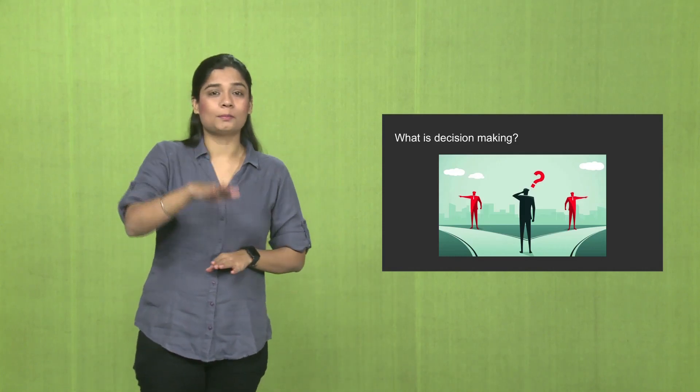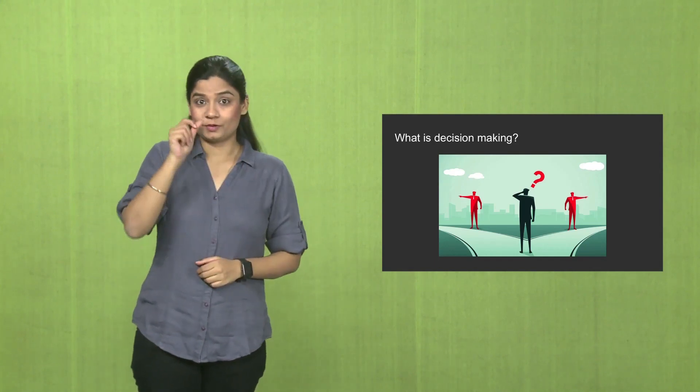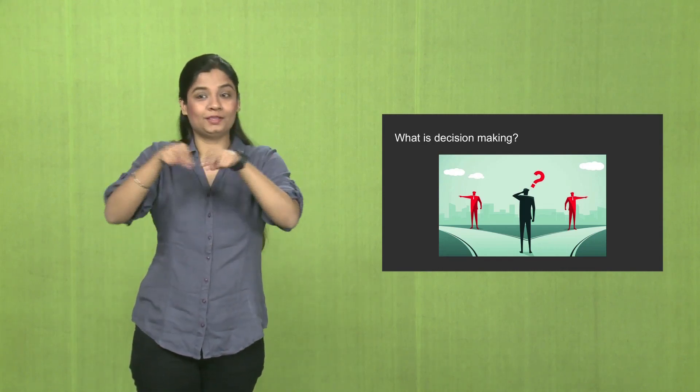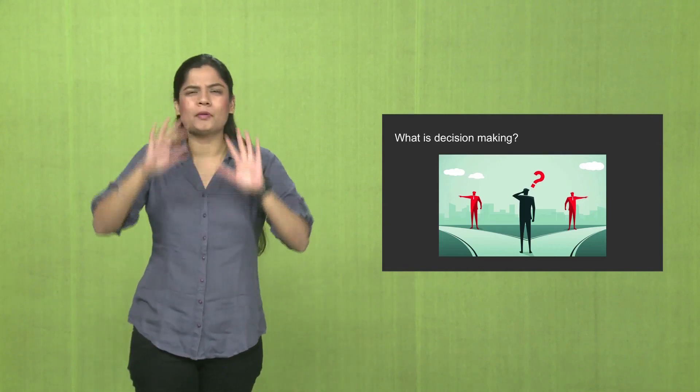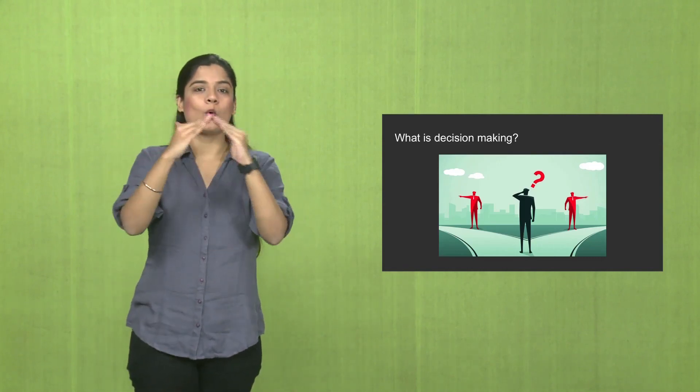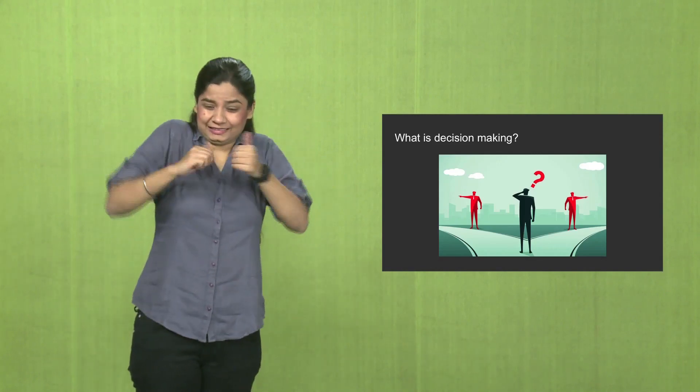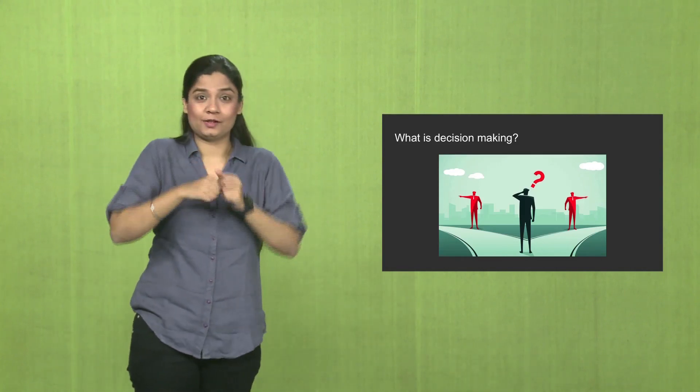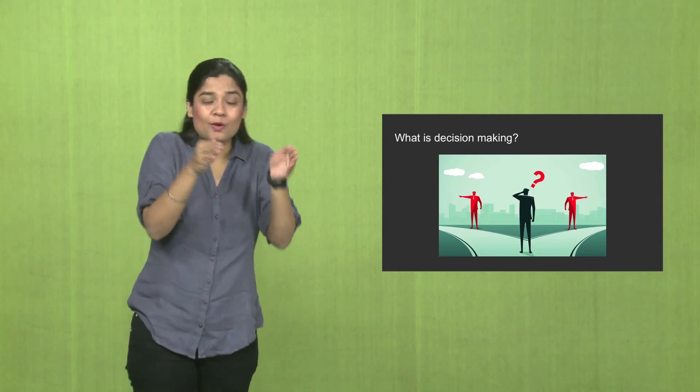It involves different steps. First is identifying a problem. For example, let us discuss it through a story. There is a man, his name is Rahul. His family is not happy in the house that they are living in. Rahul is not happy and his family is also not happy. Why?